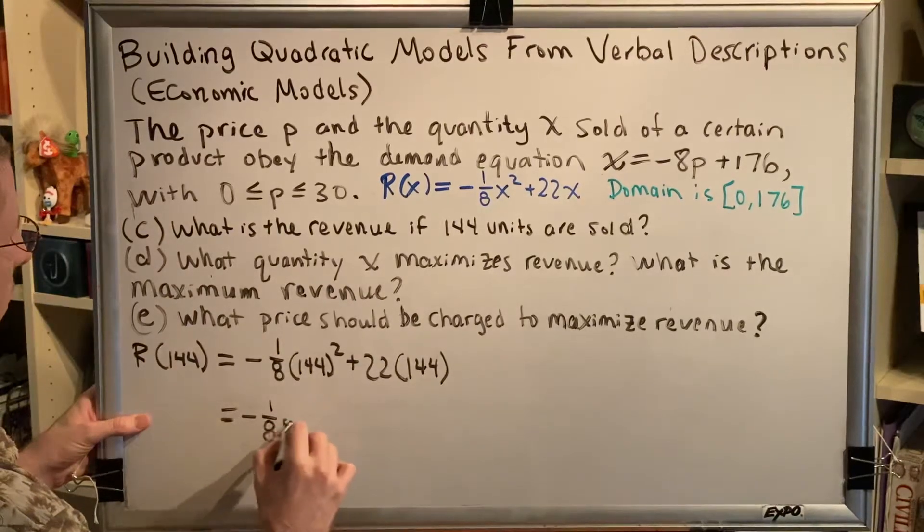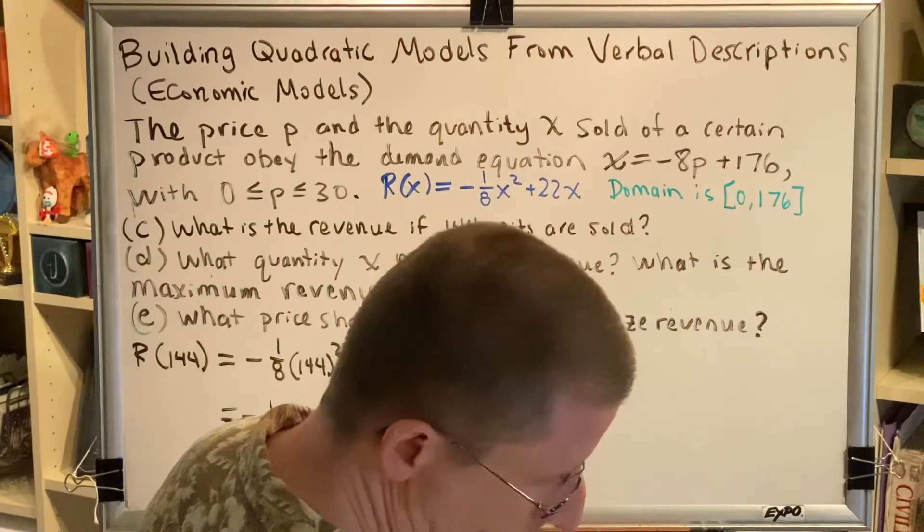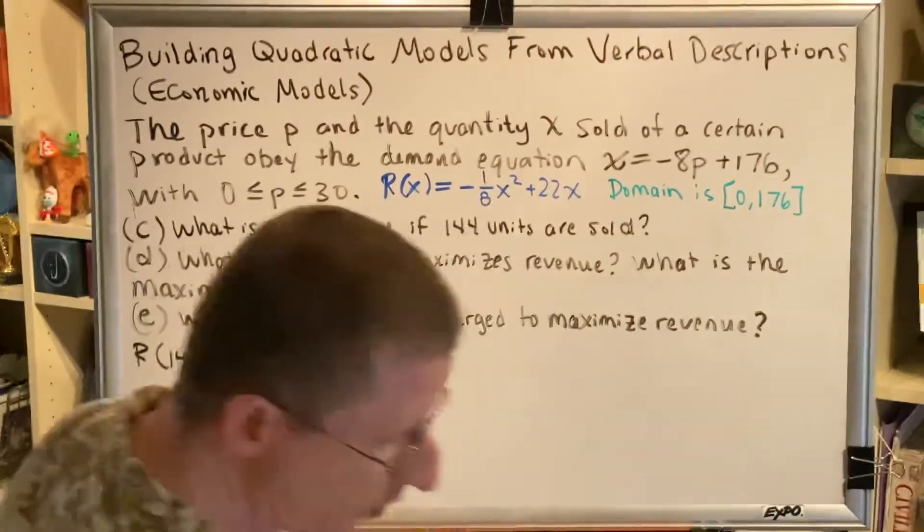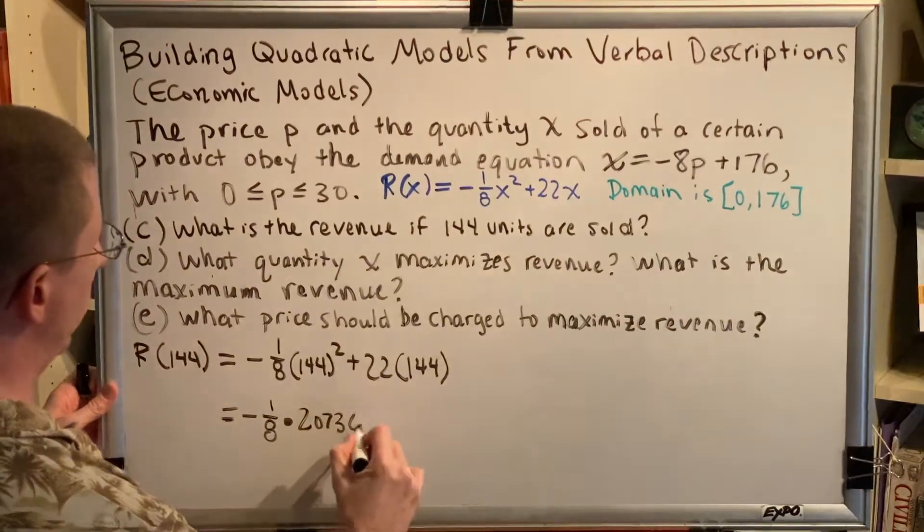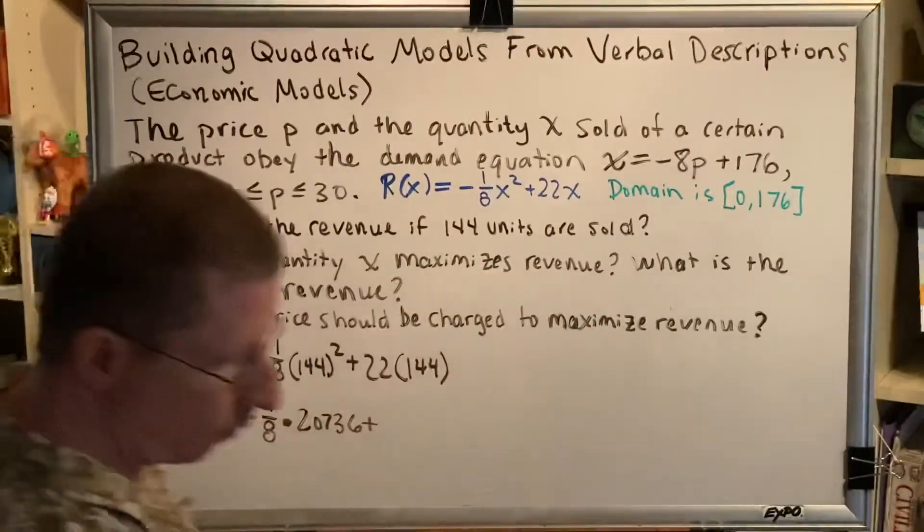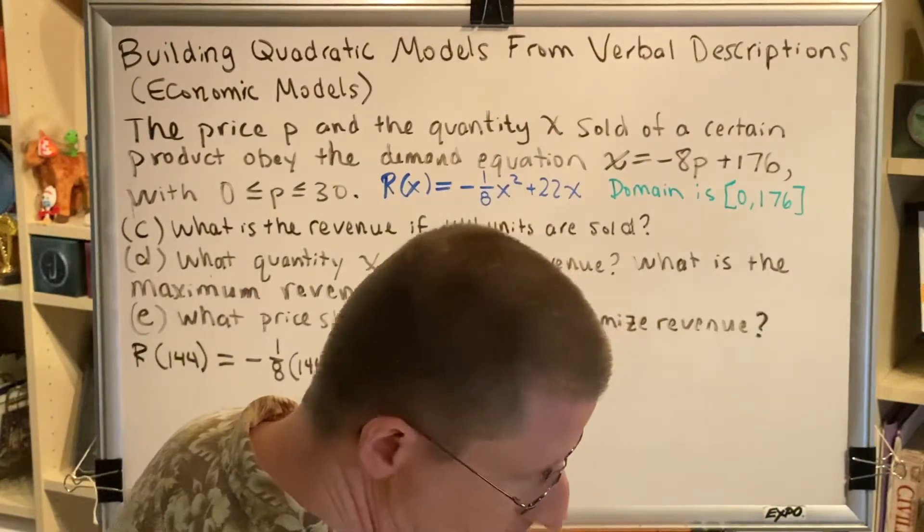So negative 1/8 times 144 squared is 20,736 plus 22 times 144, 31,736.